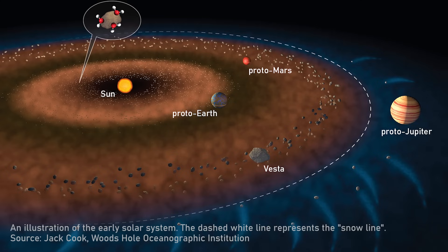The snow line is somewhere in our solar system out around between Mars and Jupiter. That's the reason why the giant planets — Jupiter, Saturn, Uranus, and Neptune — all have huge amounts of ice and water. Jupiter and Saturn don't have so much themselves, but their moons do. Some of those moons have so much water that there are subsurface oceans, and a number of those moons have more water on them than there is water on Earth.